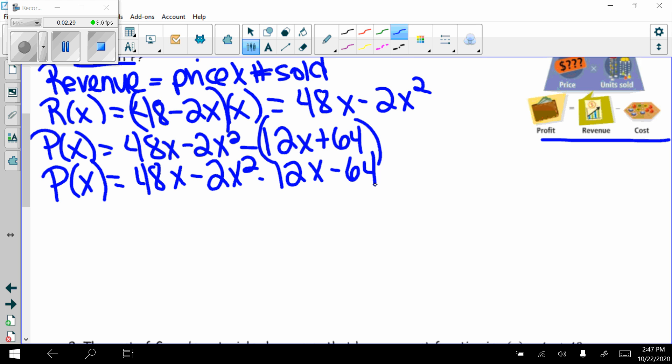So my profit is equal to 48x - 2x² - 12x - 64. Combine like terms. I'm going to write it in standard form, so negative 2x² plus 48x minus 12x, then I get 36x - 64. There's my profit function.